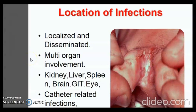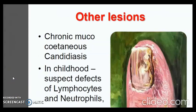Infection can be localized or disseminated with multi-organ involvement including the kidney, liver, spine, brain, gastrointestinal tract and eye. Catheter-related infections can also occur. Candida granuloma and chronic mucocutaneous candidiasis are serious manifestations seen in immunodeficiencies. In childhood, it occurs due to defects in lymphocytes and neutrophils.